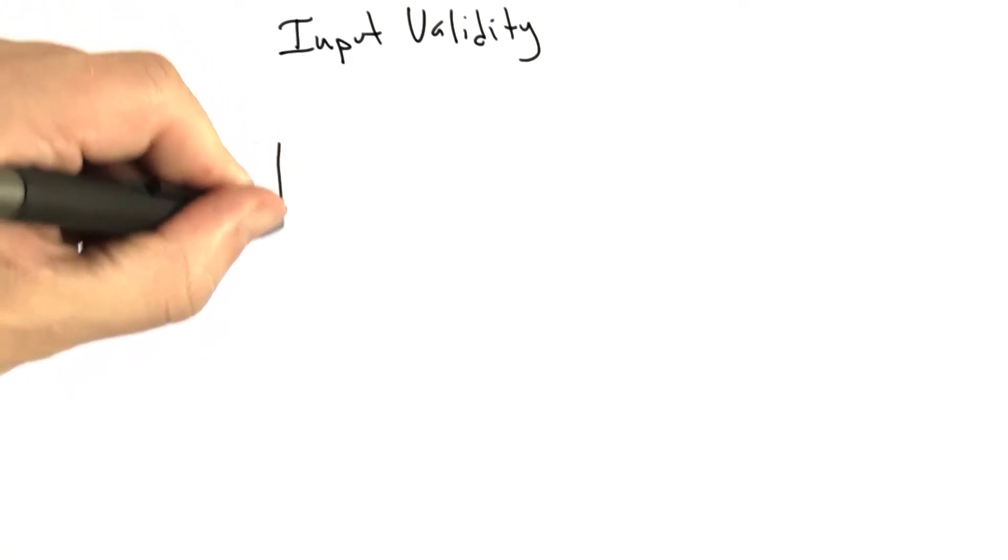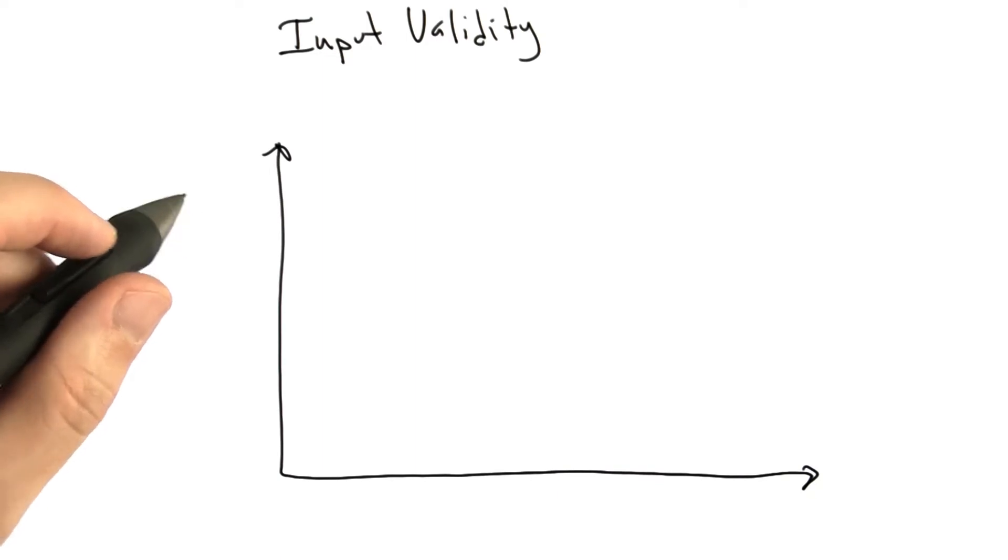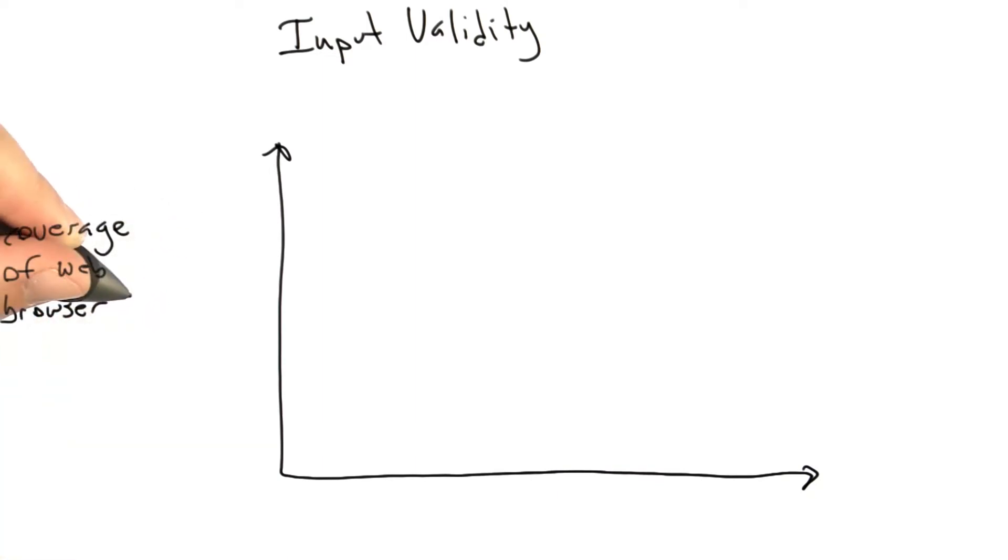Let's take a little bit different view of this same problem. What I want to do is draw a graph here showing the level of code coverage that our random test cases are inducing on the system under test.